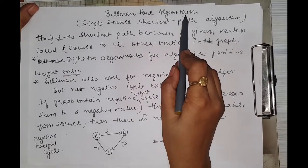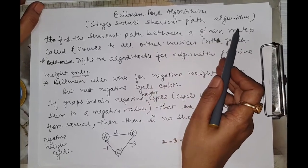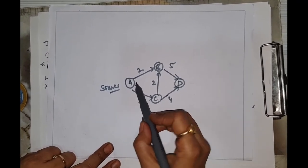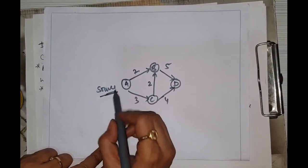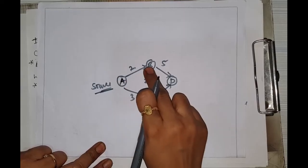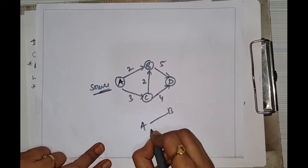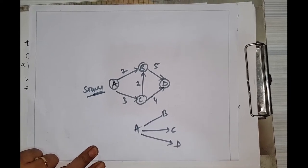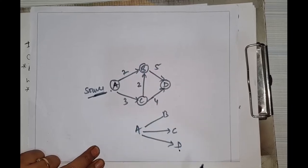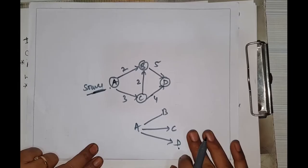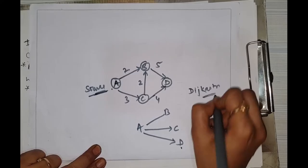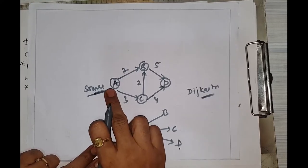Hello everyone, today we will study the Bellman-Ford algorithm. It is a single source shortest path algorithm. In this graph we have four vertices and each edge has a weight. We are also given a source vertex A. In a single source shortest path algorithm, we have to find the shortest distance between the source vertex to every other vertex.